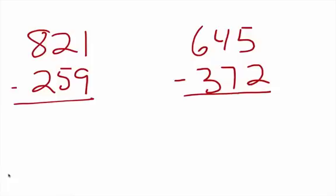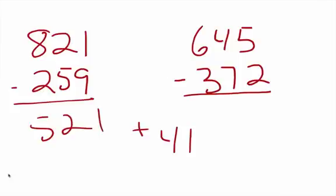So let's do a couple more here. We have 821 minus 259. We're going to bring that 259 up to 300. How far do we have to go up to get to 300? 41. So we go 300 — that's going to be 821 minus 300, which will be 521. 521 plus 41 will give us 562. We see that?